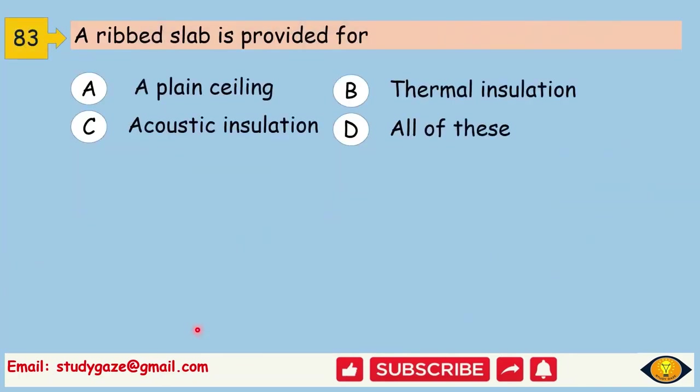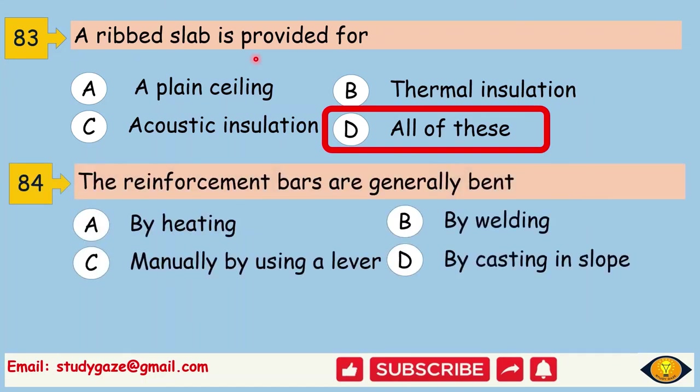A ribbed slab is provided for. Answer is all of these: a plain ceiling, thermal insulation, acoustic insulation. So, for all these we provide a ribbed slab. The reinforcement bars are generally bent. We generally bent reinforcement bars manually by using a lever.